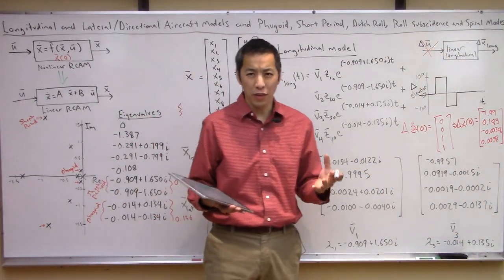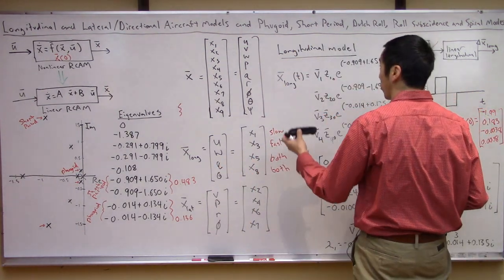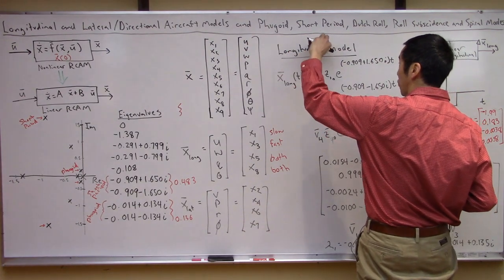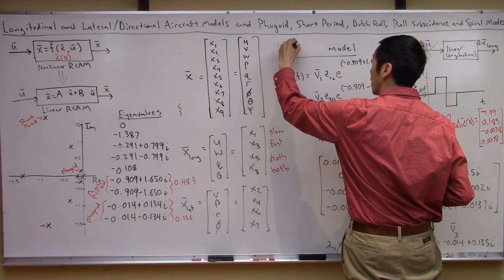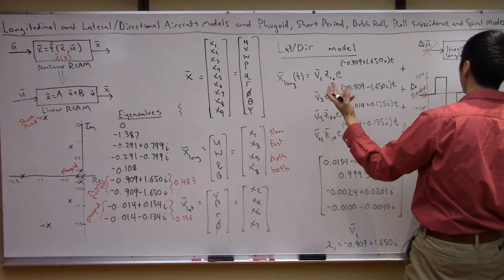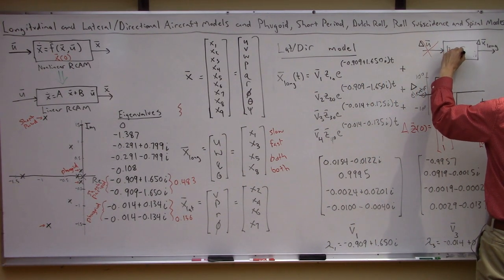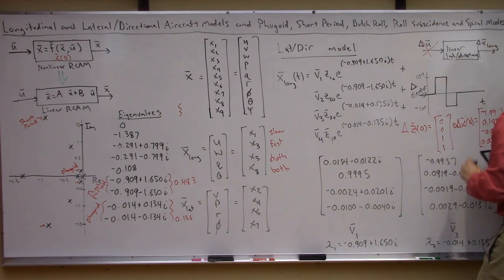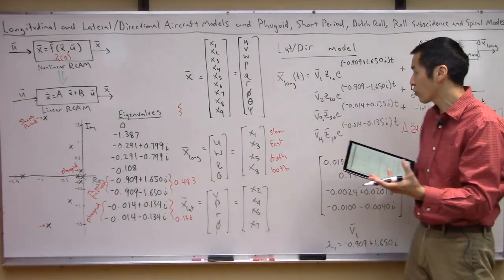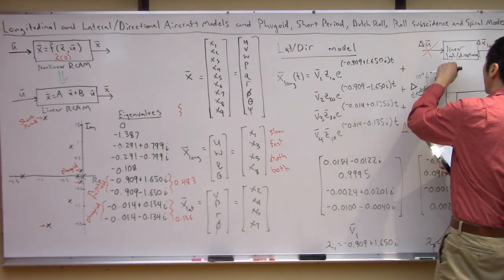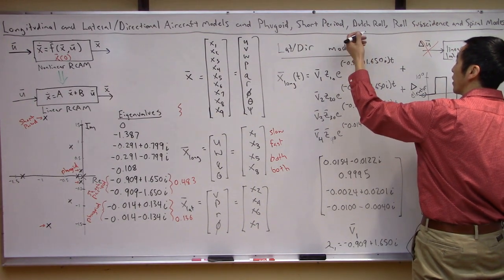With that said, let's now move our attention to the lateral directional aircraft model and its associated set of modes. The analysis is almost identical — a nice thing about working with linear systems. We basically change this from longitudinal to the lateral directional model. The A-lat matrix is just extracted from the other section of the A-tilde matrix — the lower right block — giving us a four-by-four lateral directional dynamics model.